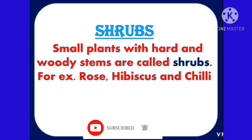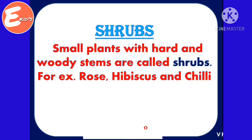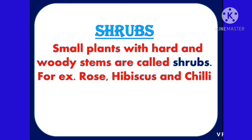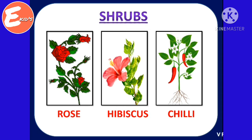Shrubs. Small plants with hard and woody stem are called shrubs. For example, rose, hibiscus and chili. Rose, hibiscus and chili.